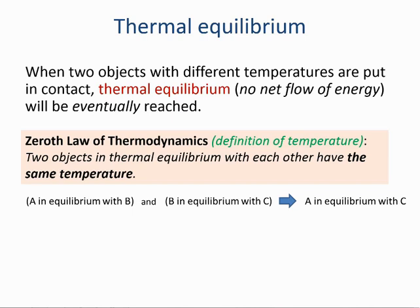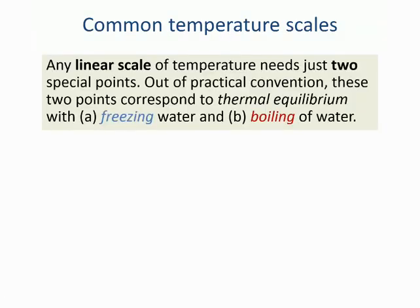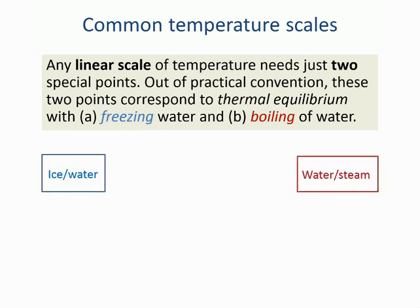Now that we define the concept of thermal equilibrium, we are ready to define a temperature scale. If we want our scale to be linear, we need just two special points. Out of convention, these two special points correspond to thermal equilibrium with freezing water, that is, an ice-water mixture, and boiling water, that is, a water-steam mixture.